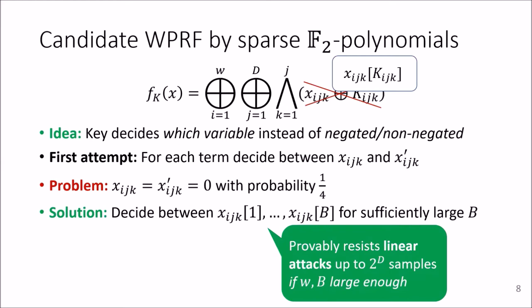And we can indeed show that this candidate, as the candidate before, probably resists linear attacks up to 2^D samples, if W and B are chosen large enough. And the analysis for this is similar to the previous analysis, but more involved due to the structure.